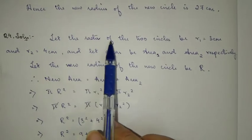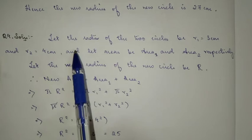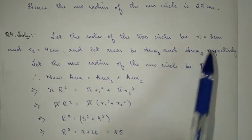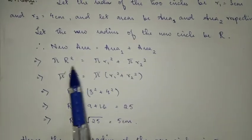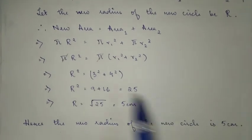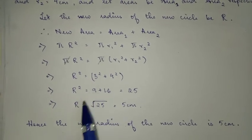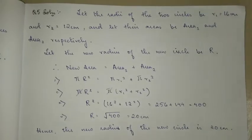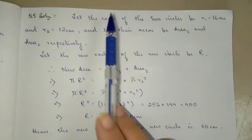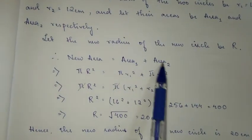Similarly, in question number 4, you will write down what's given again. In question number 4, they are talking about area. The new area equals area 1 plus area 2. We have to take the square root of the new circle's area.